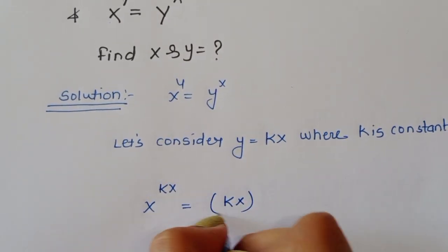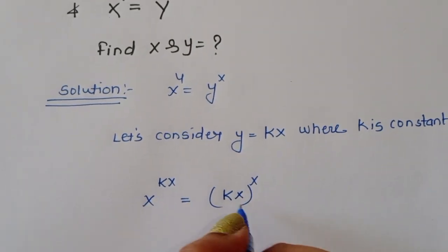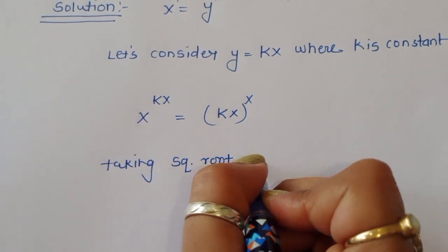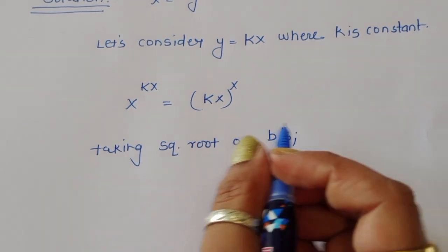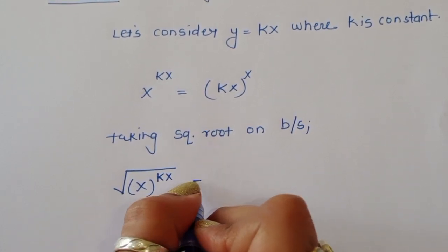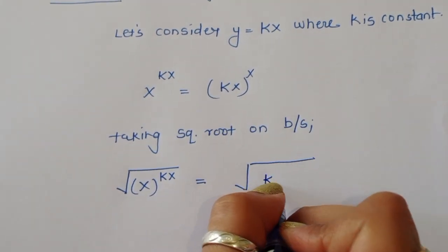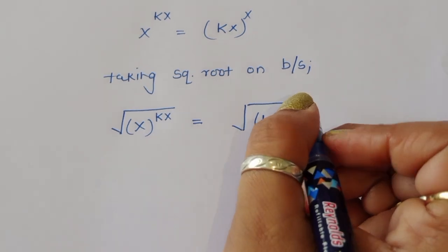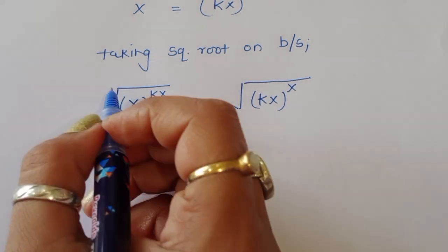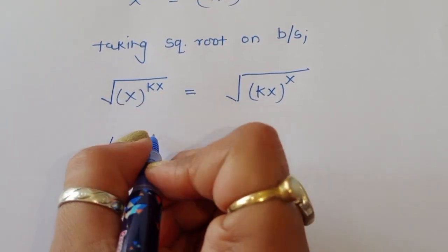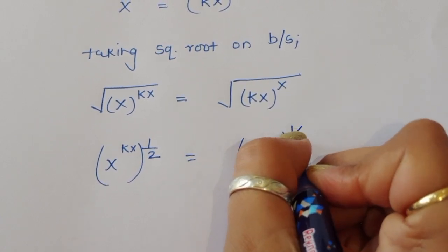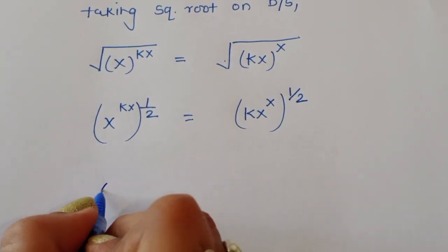We can write (kx)^x on the right side. Now we take the square root on both sides. Taking square root on both sides, we get the square root of x^(kx) equals the square root of (kx)^x. Since square root means the power of 1/2, we write x^(kx · 1/2) = (kx)^(x · 1/2).